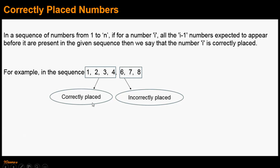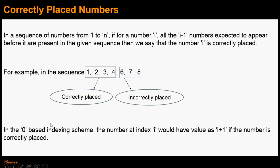For the correctly placed numbers, we can also say that in the 0-based indexing scheme, the number at index i would have value i plus 1 if the number is correctly placed. So number 4 is at index 3 in the 0-based indexing scheme and has value equal to its index plus 1, that is 4. Similarly, for number 3, its value of 3 is equal to its index plus 1.